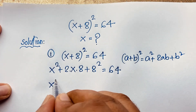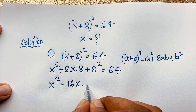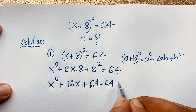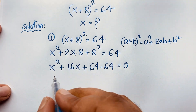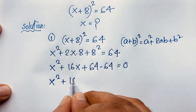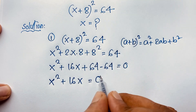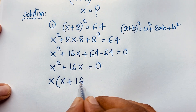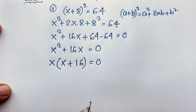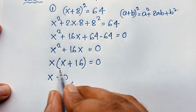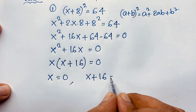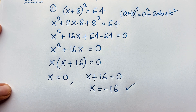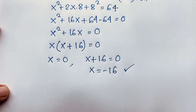So we get x² + 16x + 64 = 64. Moving 64 to this side, it becomes x² + 16x = 0. Now x is common, so factoring gives x(x + 16) = 0. Therefore x = 0, and from x + 16 = 0, we get x = −16. Our final solution is x = 0 and x = −16.